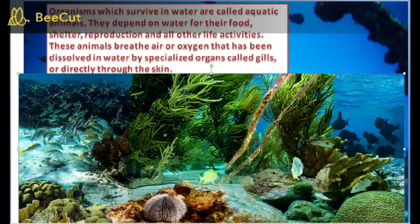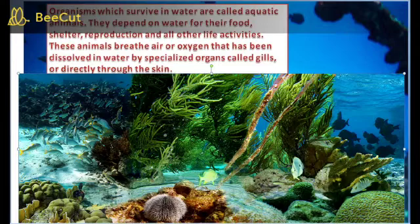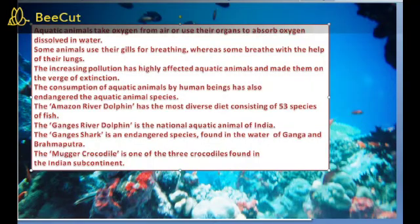Organisms which survive in water are called aquatic animals. Aquatic animals take oxygen from air or use their organs to absorb oxygen dissolved in water. Some animals use their gills for breathing, whereas some breathe with the help of their lungs.